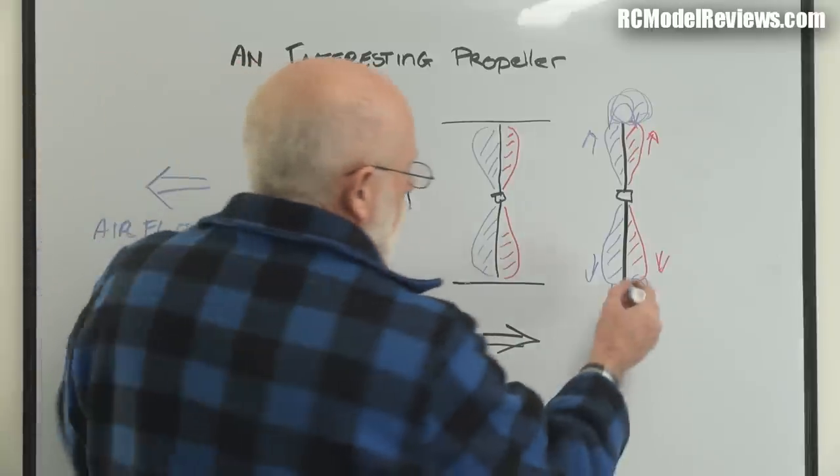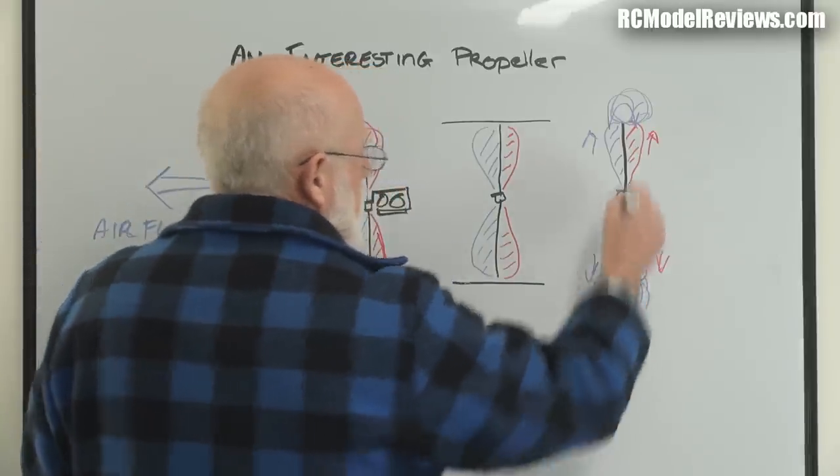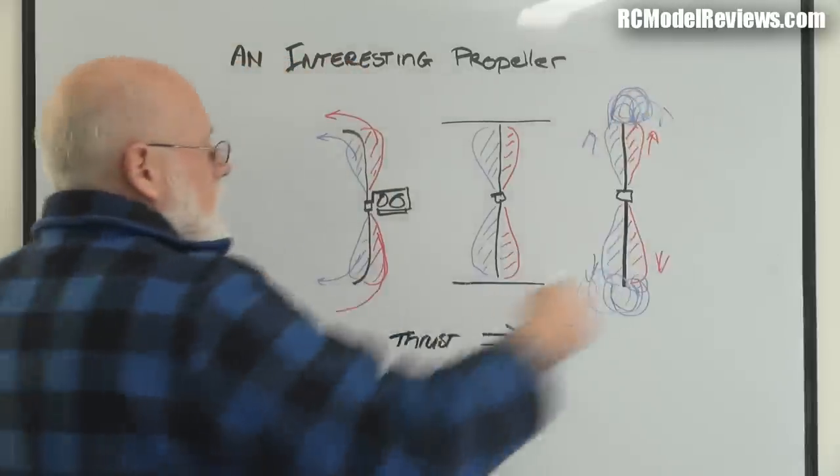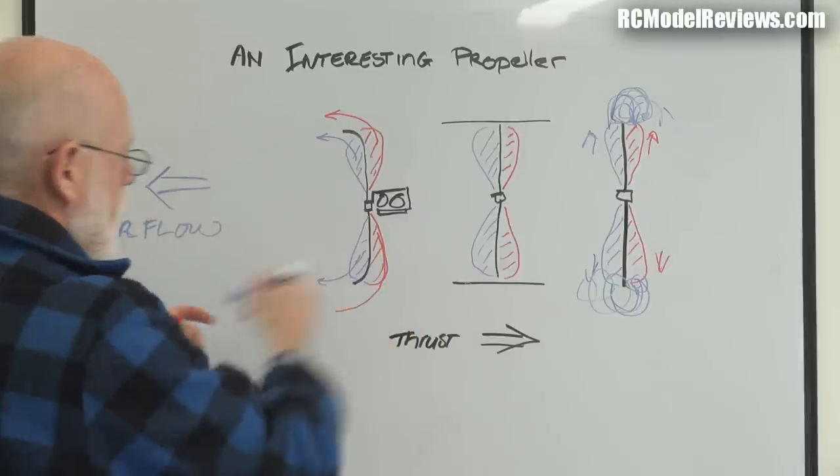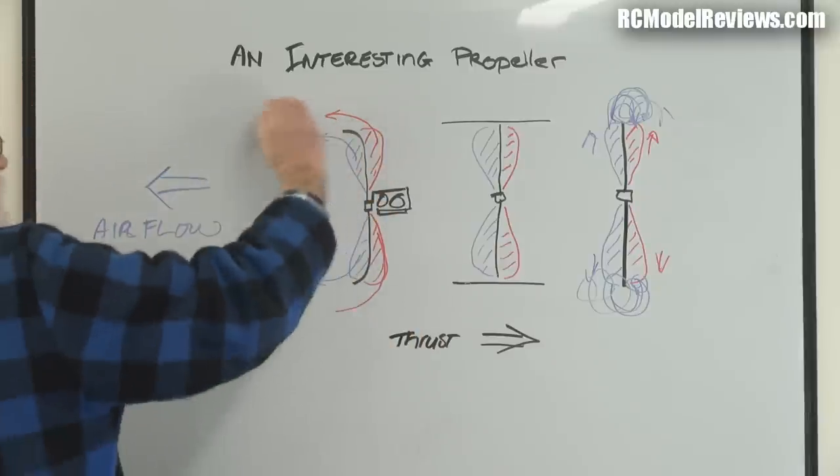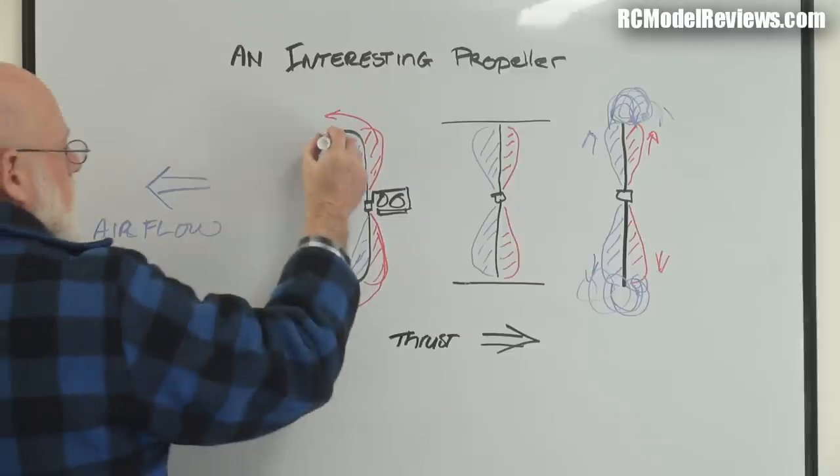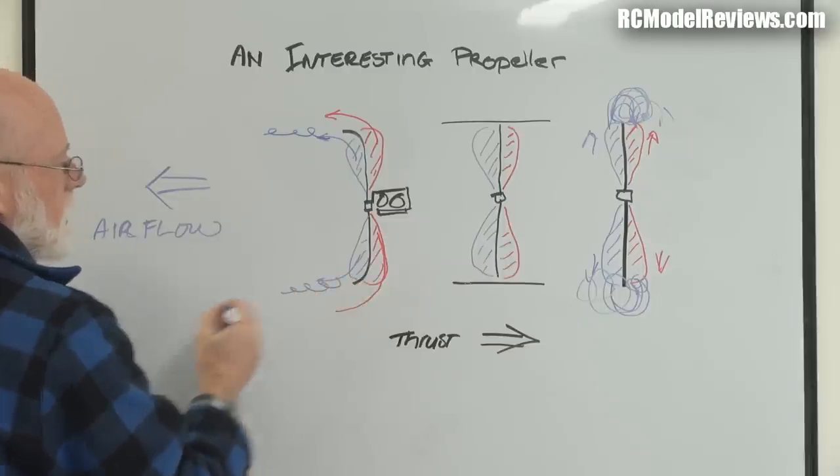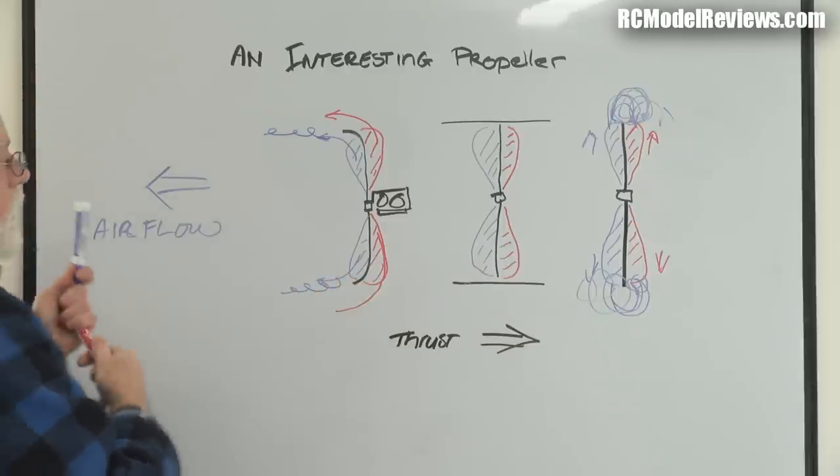Over here we get quite a large vortex because there's nothing really to stop the flow of air. But here what happens is we've got these two flows very close together because they follow the curve of that prop tip, which means you do still get a vortex, but it's a much smaller one.